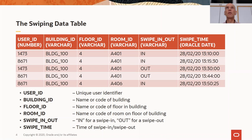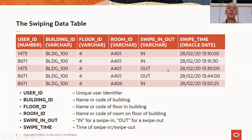Now you need to extract all user IDs which have been interacting with the given user ID for longer than 15 minutes. You can't do a simple join because you have overlapping time spans. If you look at the table closely, user 1473 and user 8671 have been in the same room for just under 15 minutes — one entered here and the other exited here. Wouldn't it be easier if Oracle had a function to do this?